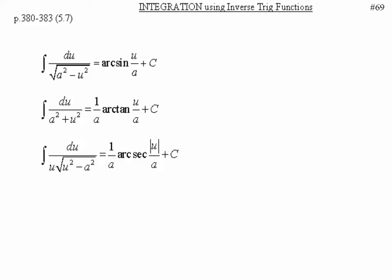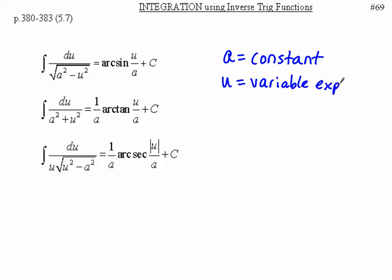Notice that two of the forms have radicals in the denominator. As you read these three formulas, some important things to remember: 'a' is a constant — you'll usually see it as numbers — and 'u' represents a variable expression. Also, 'a' must be greater than zero. Arc sine and arc secant come from radicals, so if you don't see a radical, it's probably not one of those.